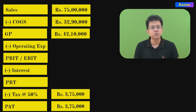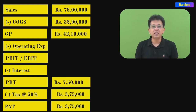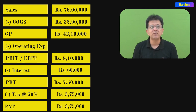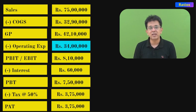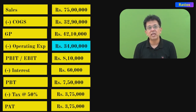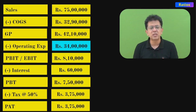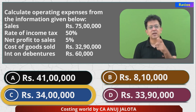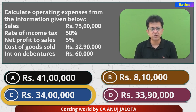So 3,75,000 plus 3,75,000 gives you PBT = 7,50,000. Interest was 60,000, so EBIT = 8,10,000. Now: 42,10,000 minus 8,10,000 = 34 lakh rupees. So that is your operating expenses — the final answer. Out of the four options, it's option C. That's the correct answer. See you all next time, take care!